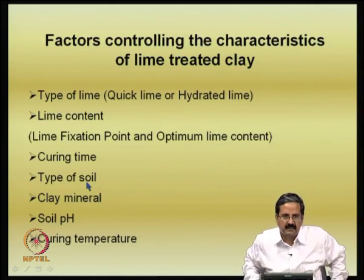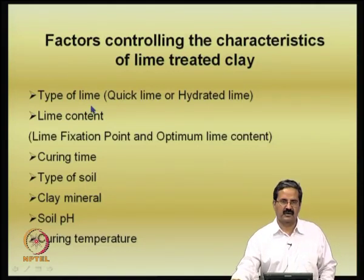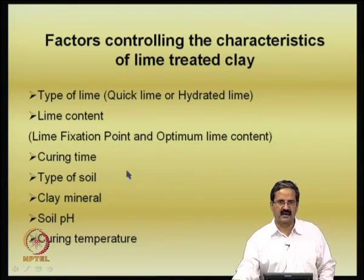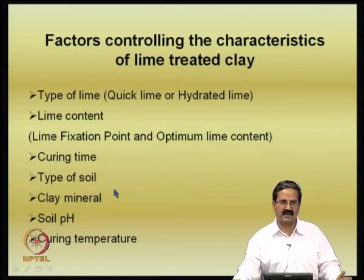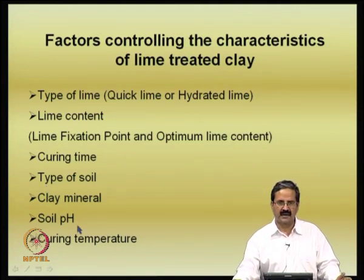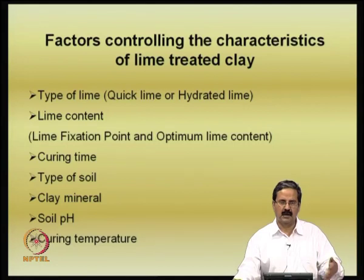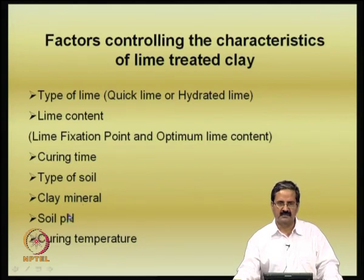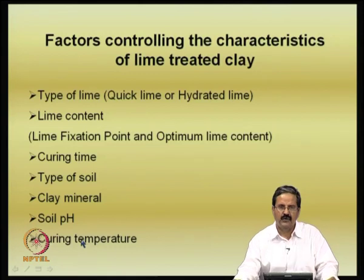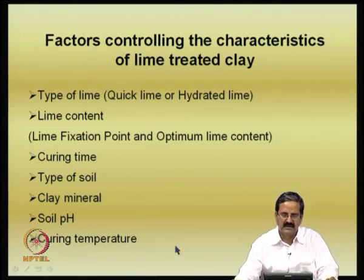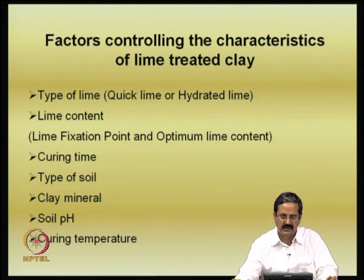Other factors include the type of soil — is it CH or CI, based on its plastic characteristics, shrinkage limit, etc. Clay mineral is another important variable — whether montmorillonite, illite, or kaolinite — and even the presence of these minerals influences behavior. Soil pH is another important variable. Curing temperature is another variable, because the chemical reactions could take some time, and the rate of reaction could be higher when the temperature is somewhat higher.